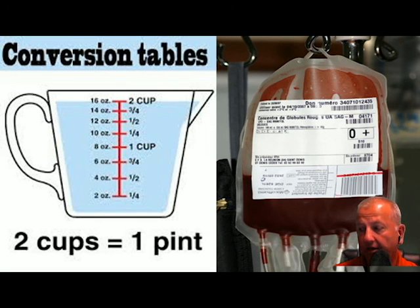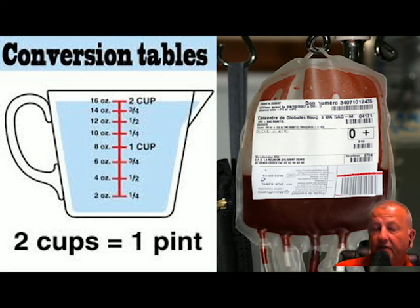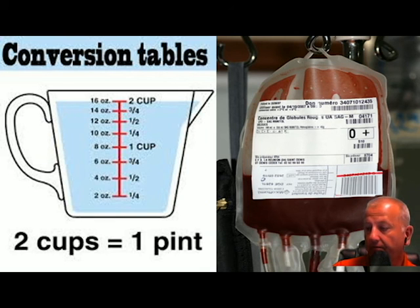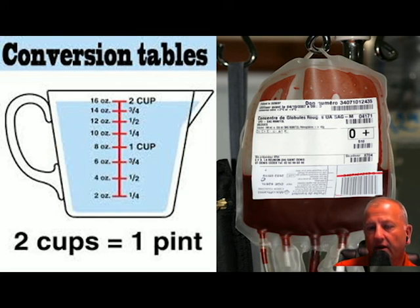Hemorrhagic shock — let's talk about it. Inadequate tissue perfusion: that's what shock is. We should consider bleeding serious with a significant mechanism of injury. A bullet to the right upper quadrant with an exit wound out the back — that is significant. We need to look for: poor general appearance, patient being pale, cool, diaphoretic — all signs of hypoperfusion. As soon as you find those signs, treat that patient for hypoperfusion.